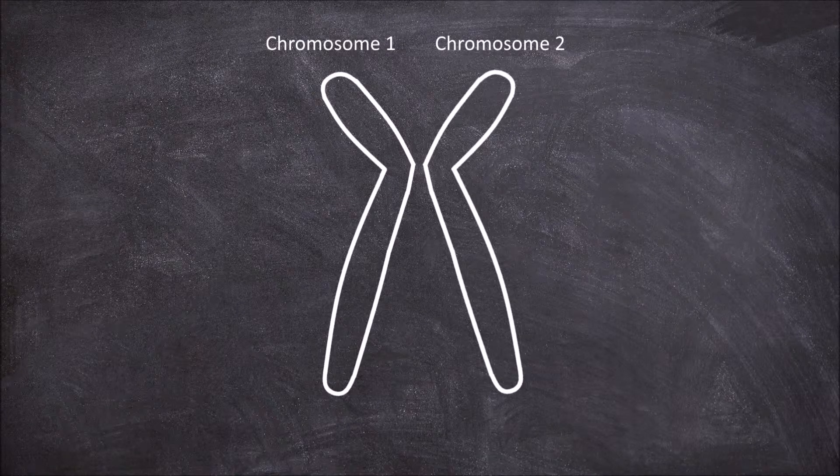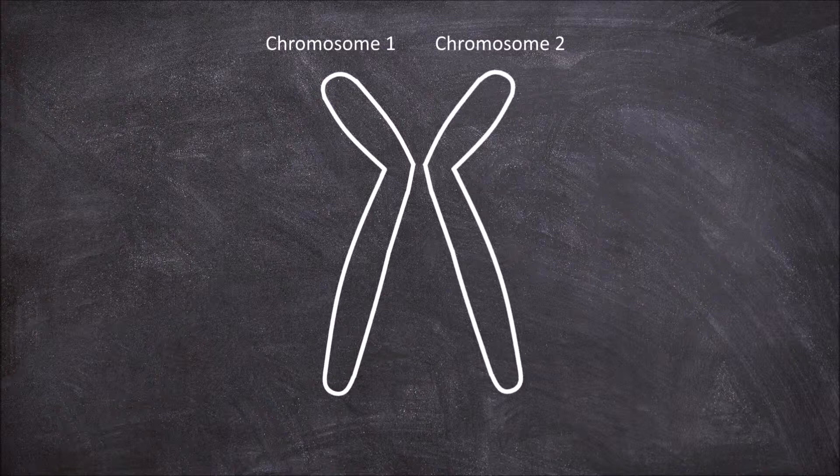In humans and most other organisms there are two sets of chromosomes. This image depicts one pair of the many chromosomes the species may have.